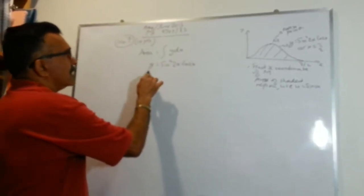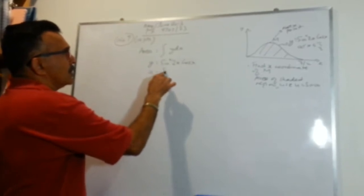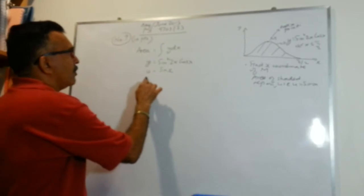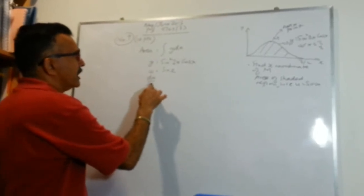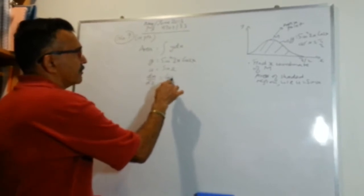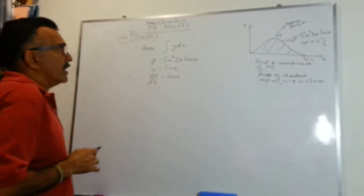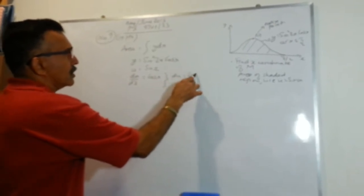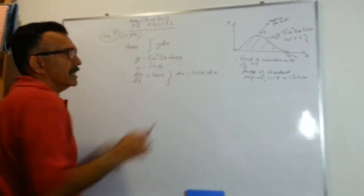We are using the substitution u equals sin x. Therefore, we can write du/dx will be equals to cos x. Great. So from here, we can write du equals cos x dx.